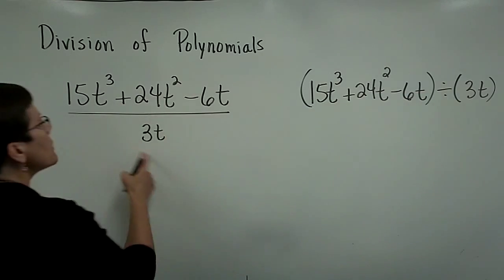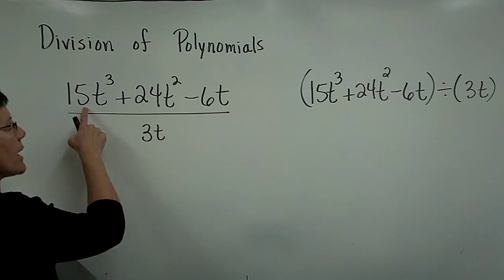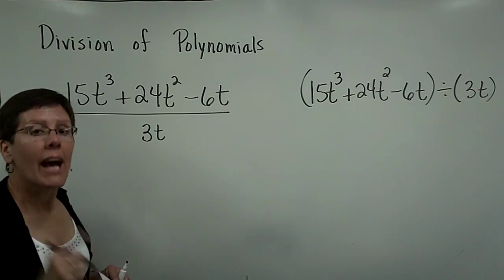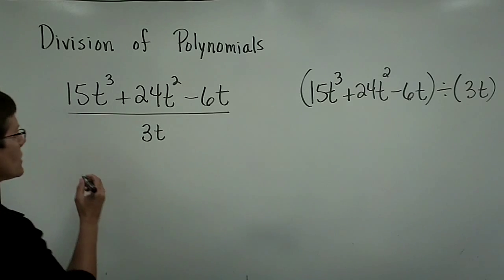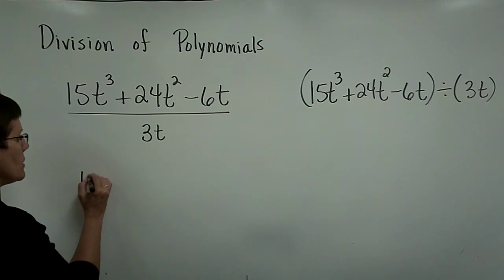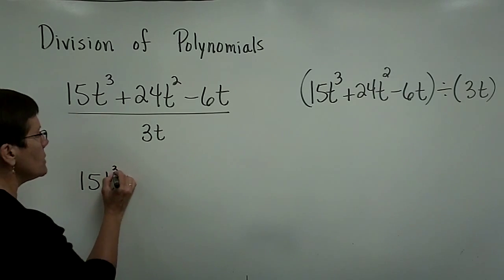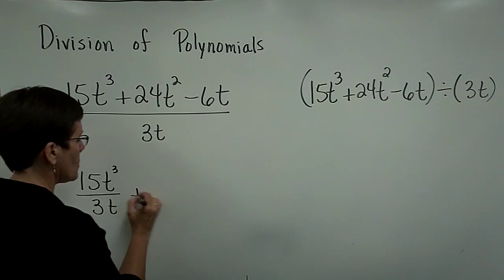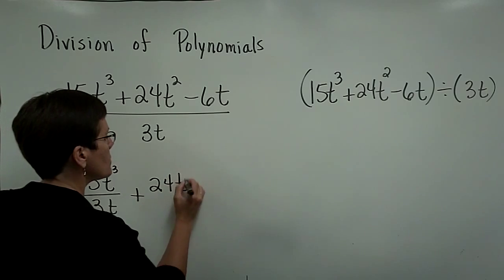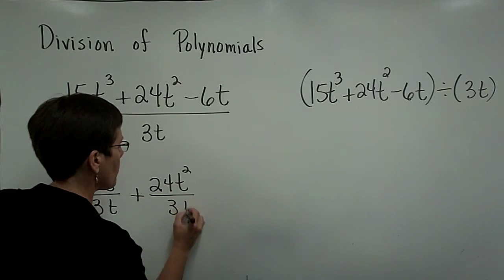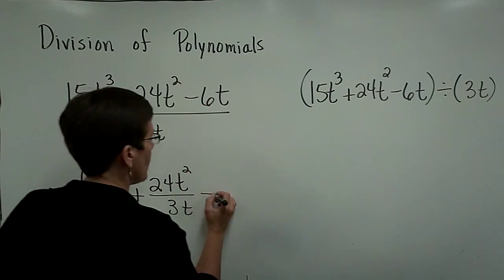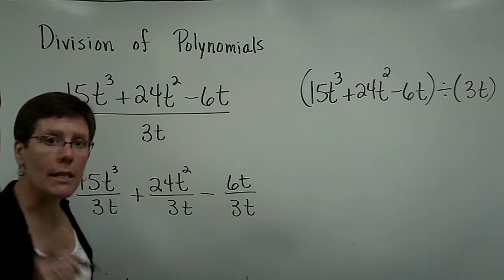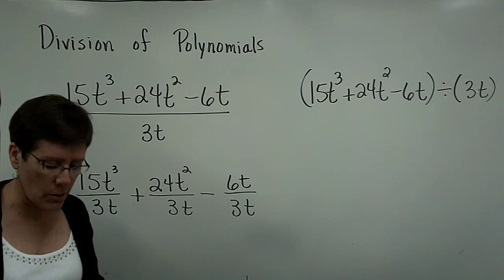The bottom line is this monomial belongs to that term, it belongs to that term, and it belongs to that term. I highly suggest you write it down that way so you simplify it accordingly. So you'll take the 15 t cubed, and it has to be divided by the 3 t. Then the 24 t squared has to be divided by the 3 t. And then the minus 6 t has to be divided by the 3 t. The 3 t belongs to every term in the numerator. And now you go ahead and reduce.